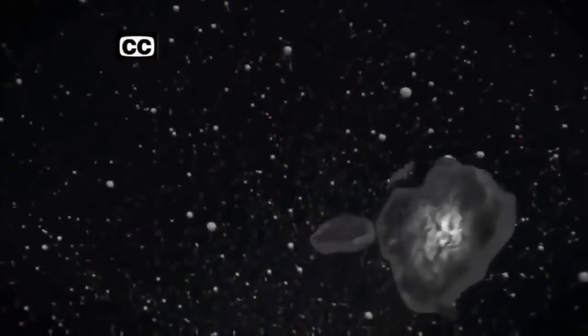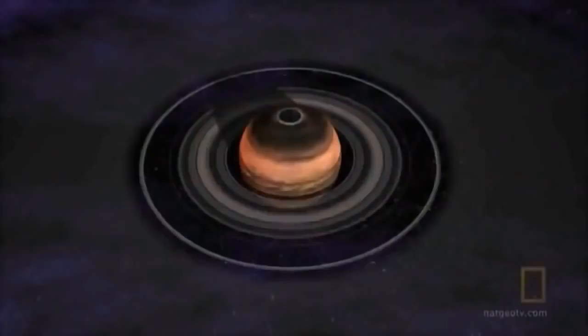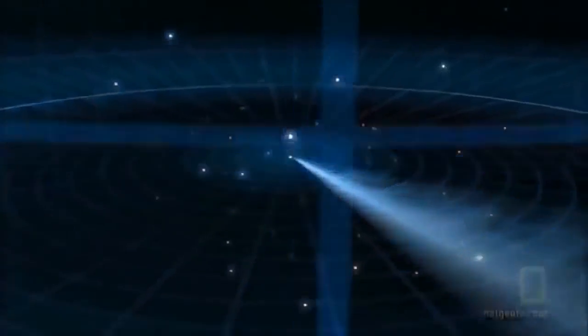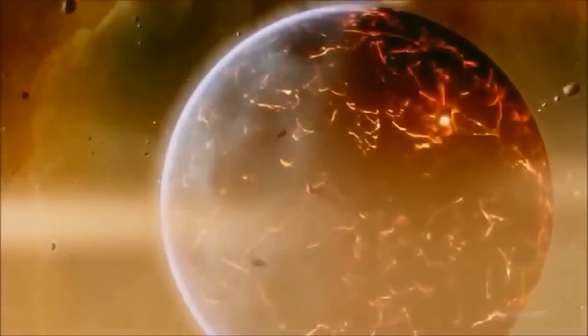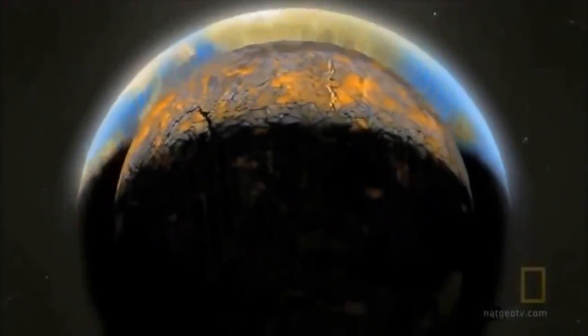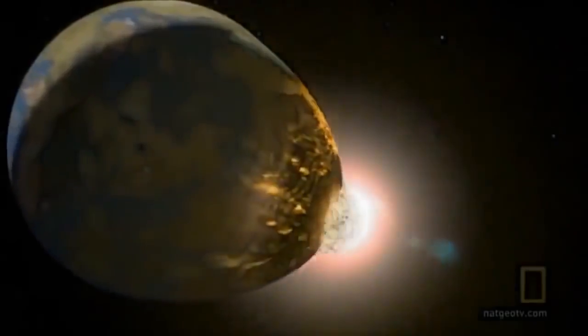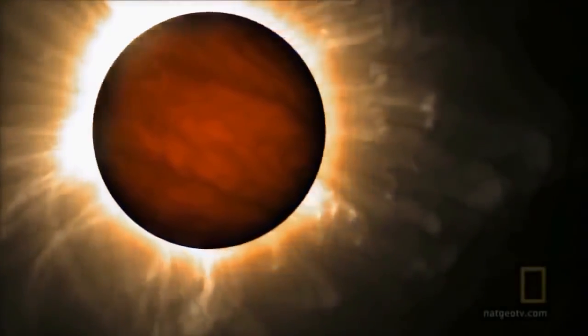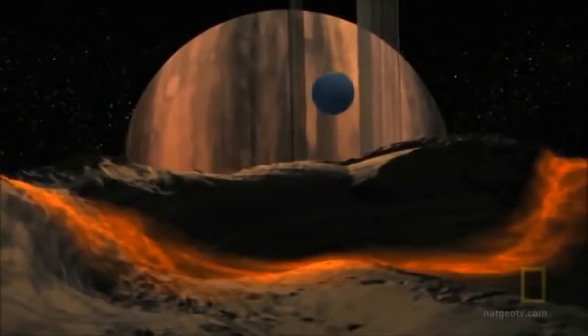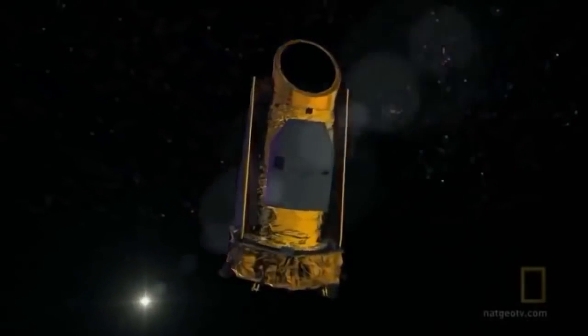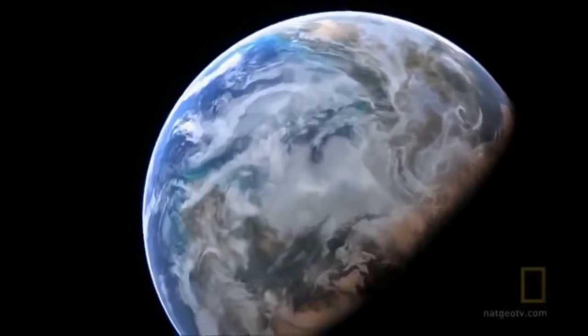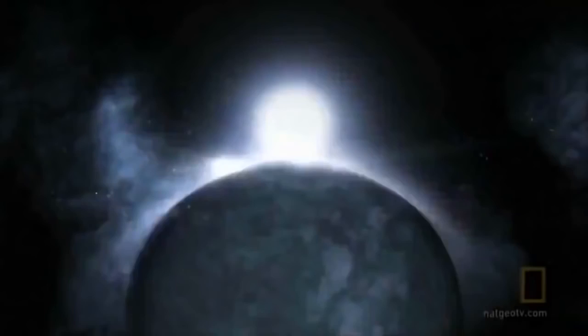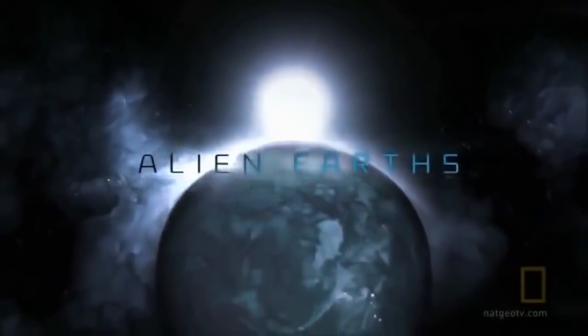Places where ice is hot and rain is made of iron. They are uncharted, unearthly, and unpredictable. And somewhere hidden among these strange new worlds, scientists seek the greatest discoveries of all. Planets like ours, alien Earths.